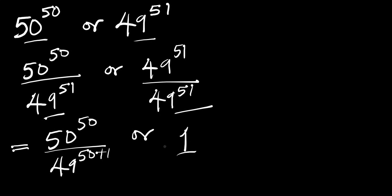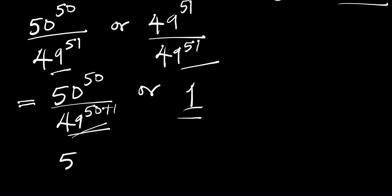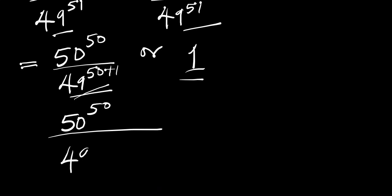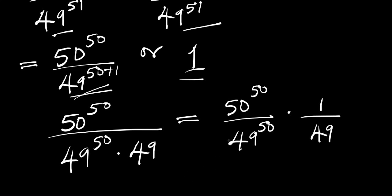Now what we are doing is simply comparing what we have here with 1. Using the identity: if you have a to the power of n plus m, this equals a to the power of n times a to the power of m. Applying this identity, we have 50 to the power of 50 divided by 49 to the power of 50 times 49, which can also be written as 50 to the power of 50 divided by 49 to the power of 50 times 1 divided by 49.